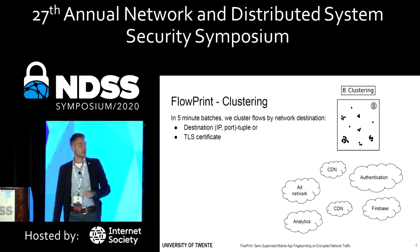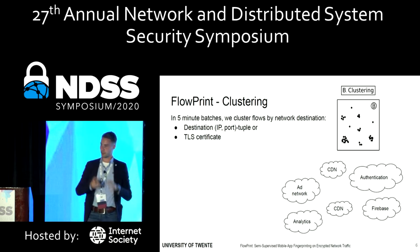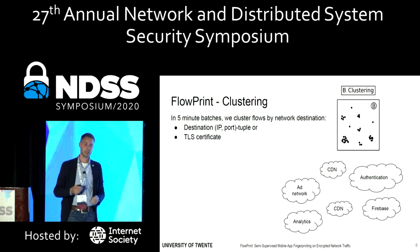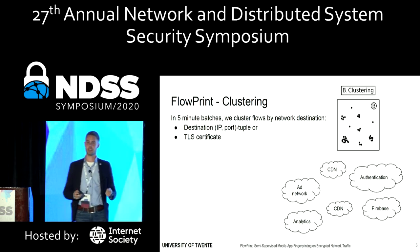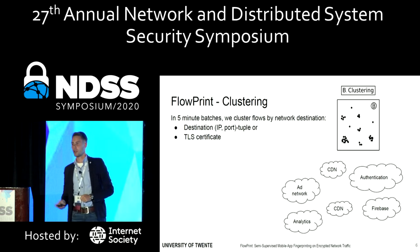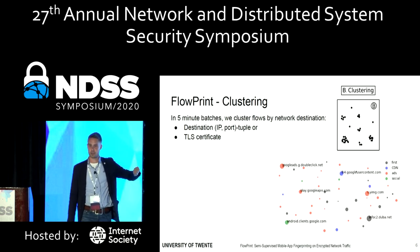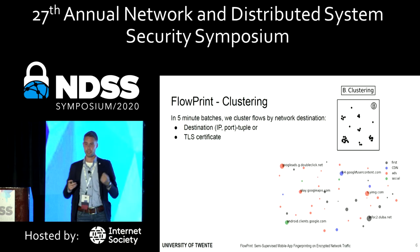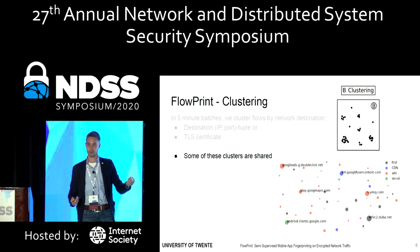Once we have this, we can go on and try to extract the different network destinations. We basically group all the flows we see in the network traffic for a specific time period — in our work this is five minutes. We look at whether flows have a similar destination tuple or a similar TLS certificate, and if so, we group the flows together into one of these network destinations. In practice, this produces different clusters of network destinations. Some of these clusters are unique for the application, but a lot of them are shared between applications, which makes individual clusters difficult to use for detection.